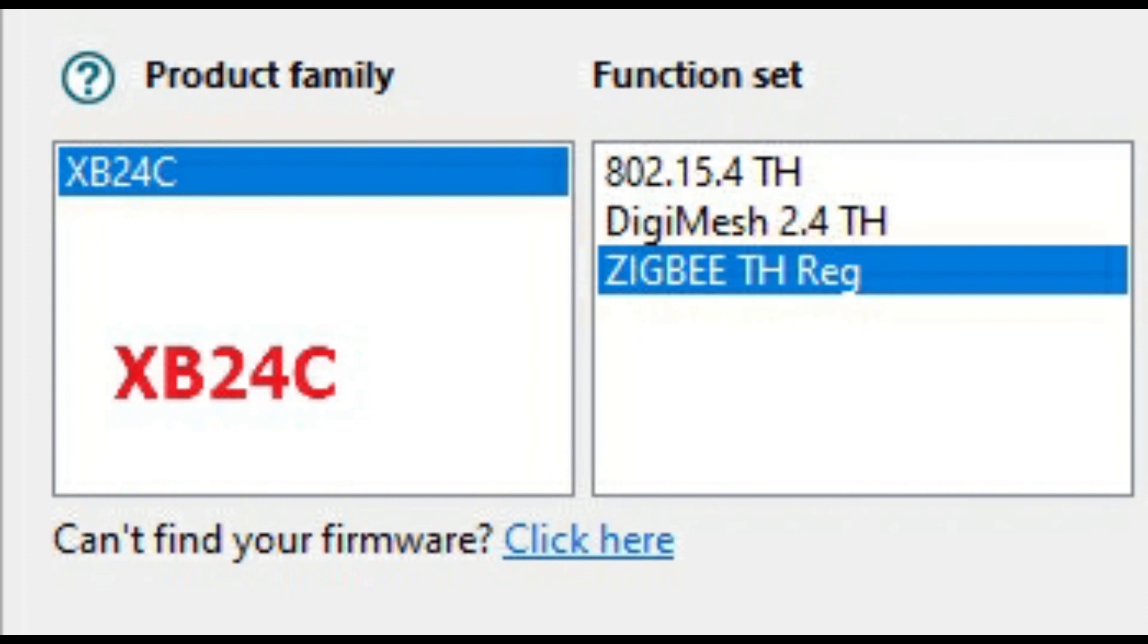Under XCTU, if you check out the product family of S2C, it will be shown as XB24C and there are three function sets: 802.15.4, DigiMesh, and ZigBee TH.